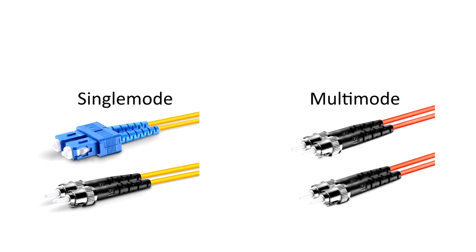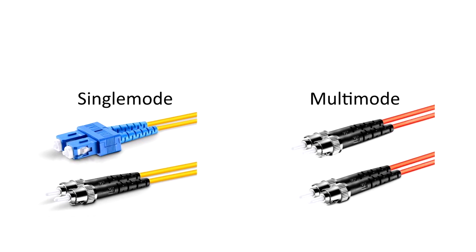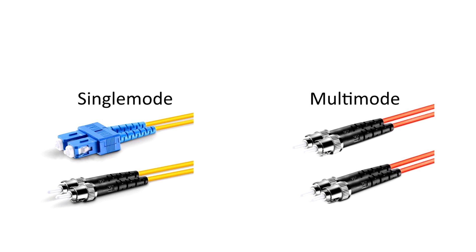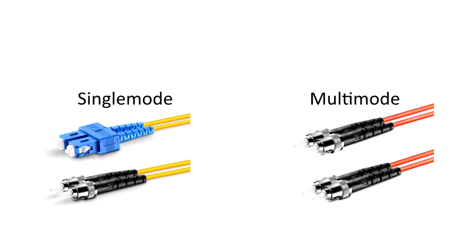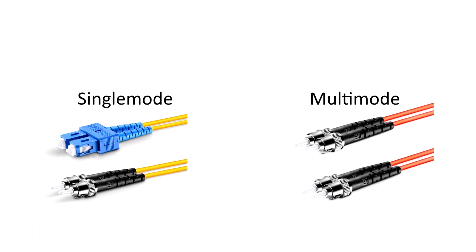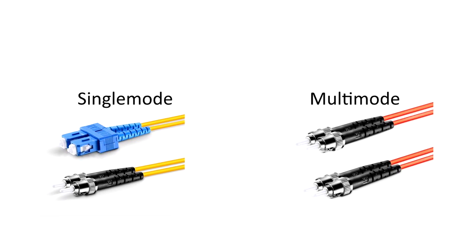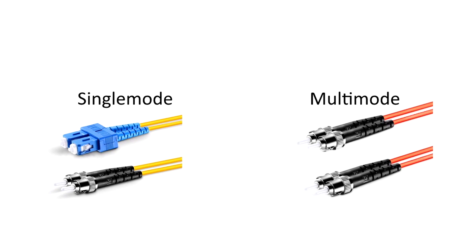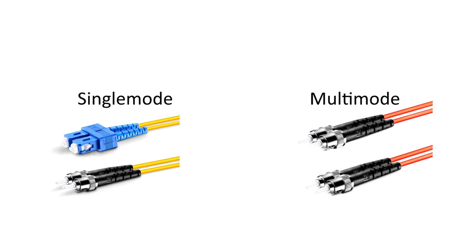Single mode fiber optic cables are typically used in applications spread out longer than a few miles, such as telephone companies creating connections between switching offices. Multi-mode cables can be used in most general fiber applications, such as connecting fiber optics to a desktop, adding segments to existing networks, or on small applications including alarm and security systems.